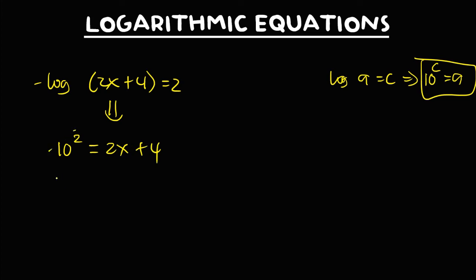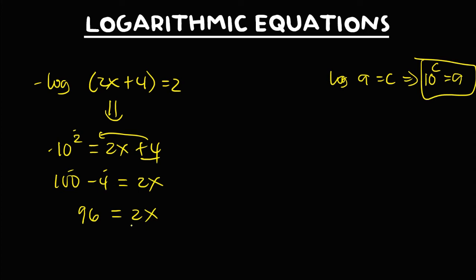Simplify: 10 to the power 2 is 100. Transpose the positive 4, which becomes negative 4, so 100 minus 4 equals 2x. That's 96 equals 2x. To solve for x, divide both sides by 2. So x is equal to 48.